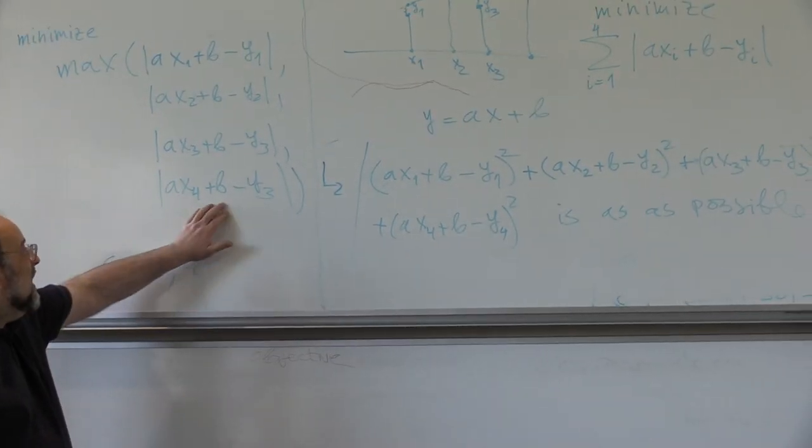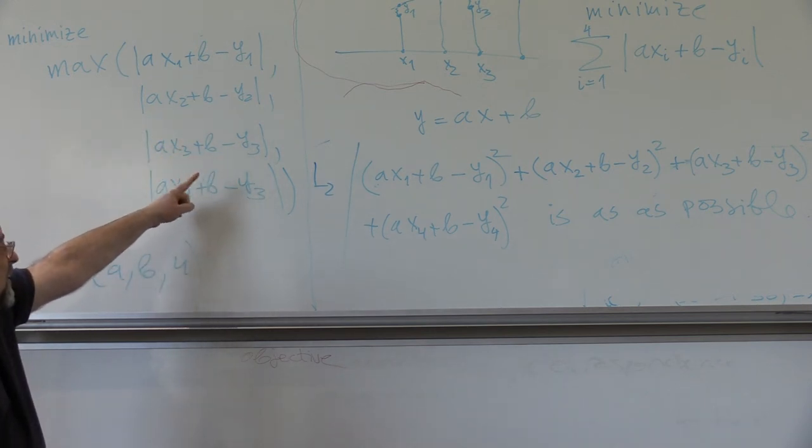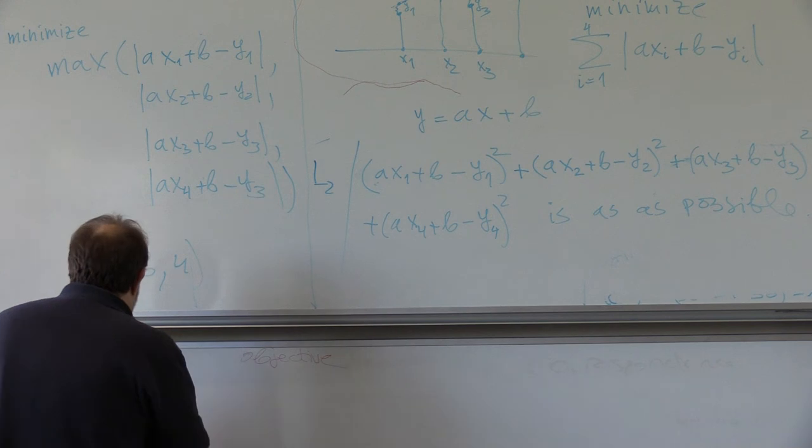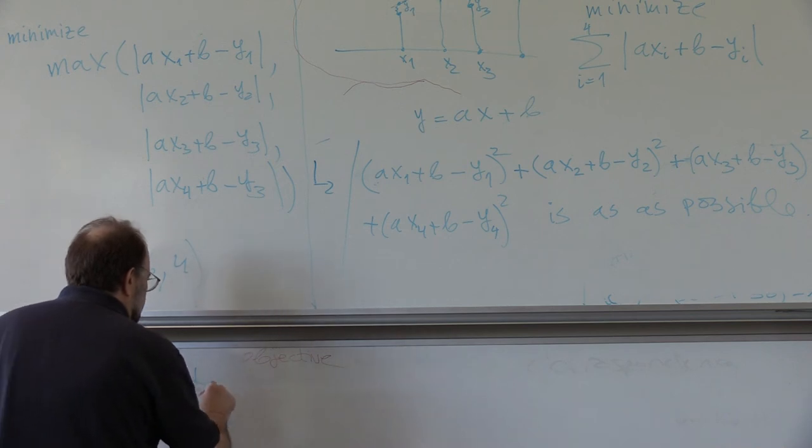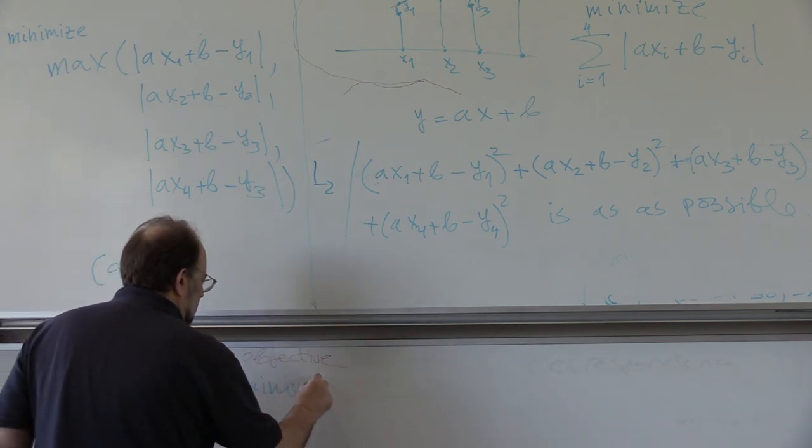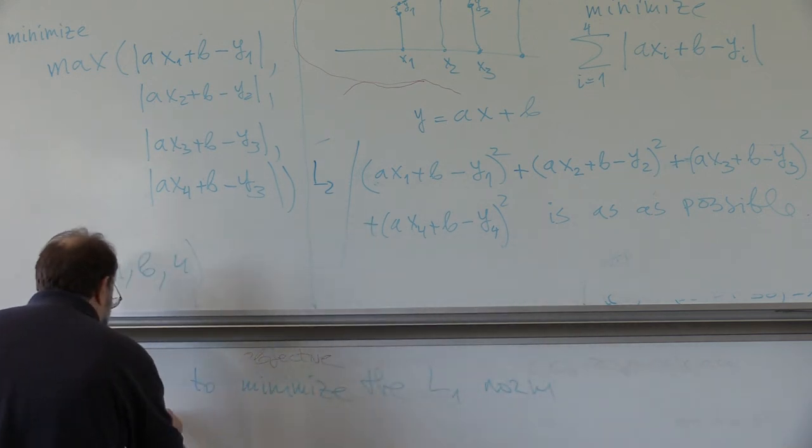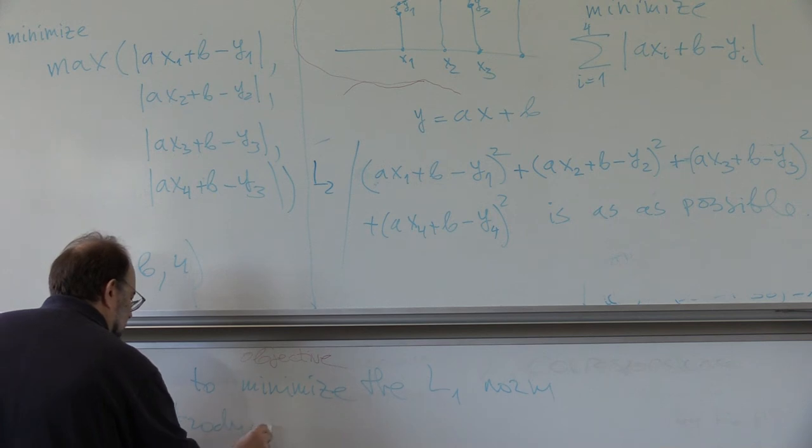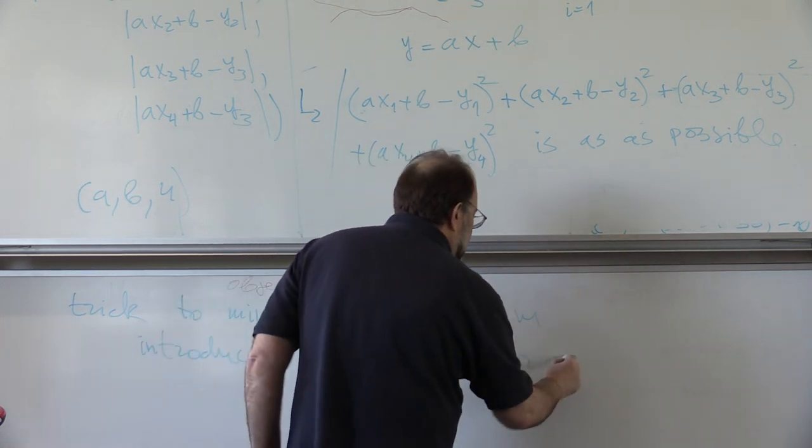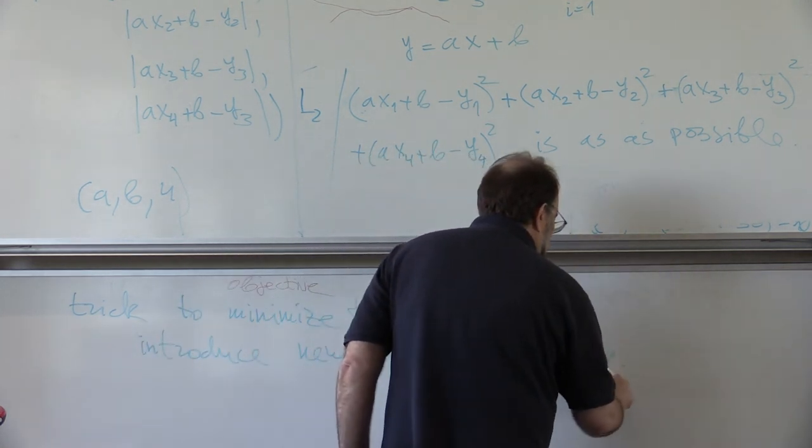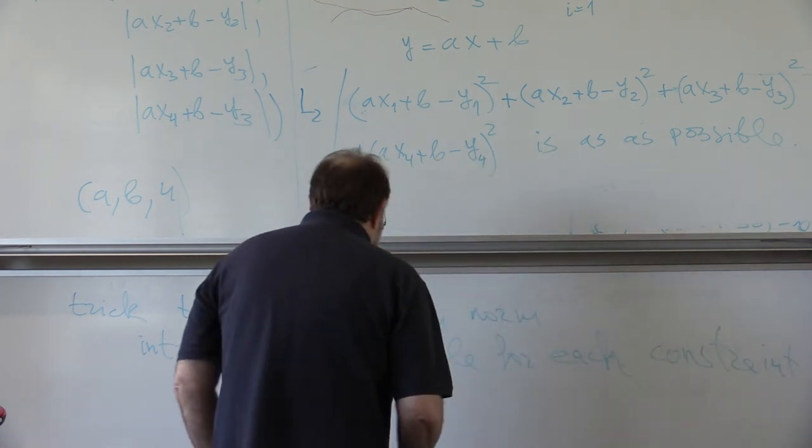Now, you cannot have a single variable that bounds all. But now, for each of these, you can have a separate variable. So, trick. So, minimize the L1 norm. Introduce new variable for each constraint.